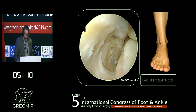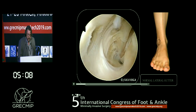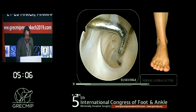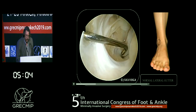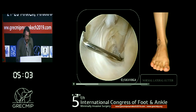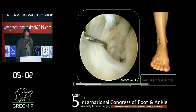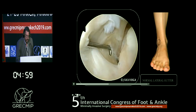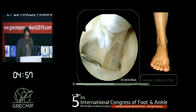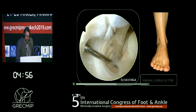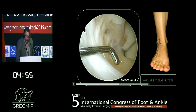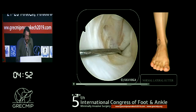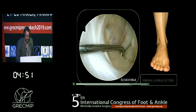This is the normal lateral gutter. You can see here the distal fascicle of the tibiofibular ligament, and on the floor of the lateral gutter you can see the anterior tibiofibular ligament. You can see it is not connected but in continuity, one to the other. This is the fibula, and here you have the lateral wall of the talus.